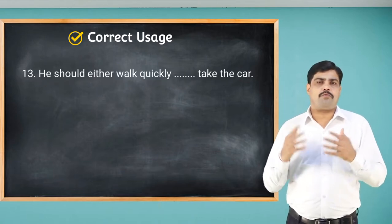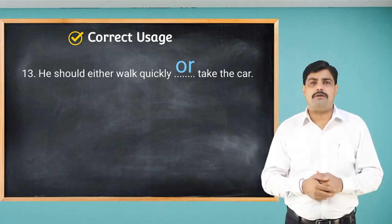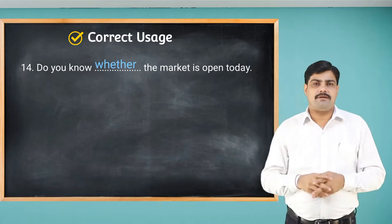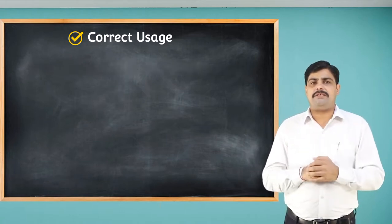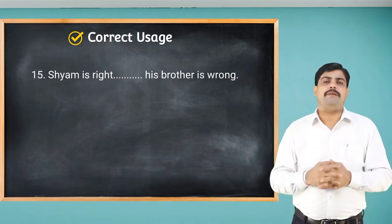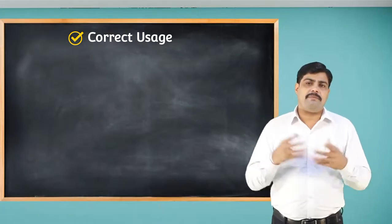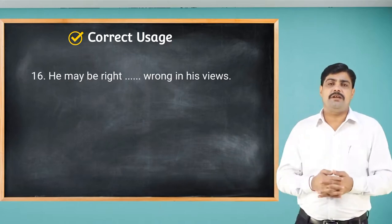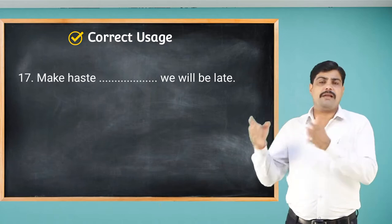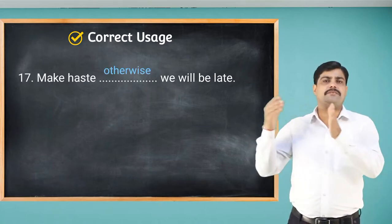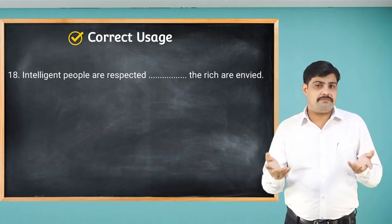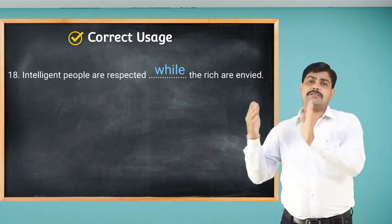'He should either walk quickly ___ take the car' — choice, so use 'or': 'He should either walk quickly or take the car.' 'Do you know ___ the market is open today' — possibility, so use 'whether': 'Do you know whether the market is open today.' 'Sham is right ___ his brother is wrong' — contrast, so use 'but': 'Sham is right but his brother is wrong.' 'He may be right ___ wrong in his views' — choice, so use 'or': 'He may be right or wrong in his views.' 'Make haste ___ we will be late' — use 'otherwise': 'Make haste otherwise we will be late.' 'Intelligent people are respected ___ the rich are envied' — use 'while': 'Intelligent people are respected while the rich are envied.'